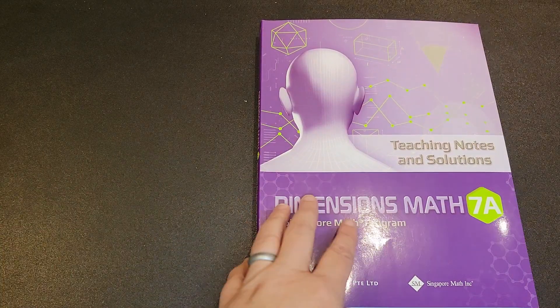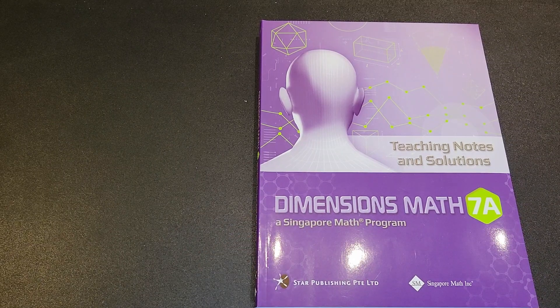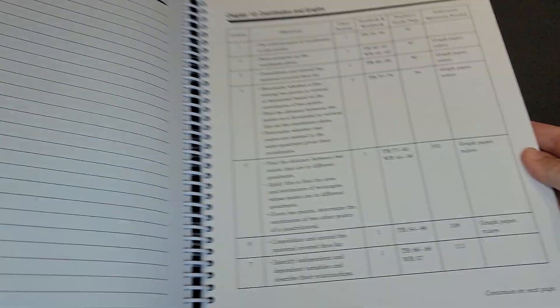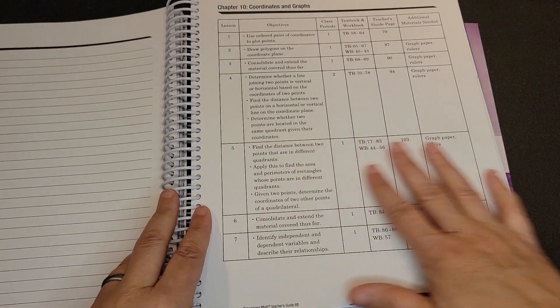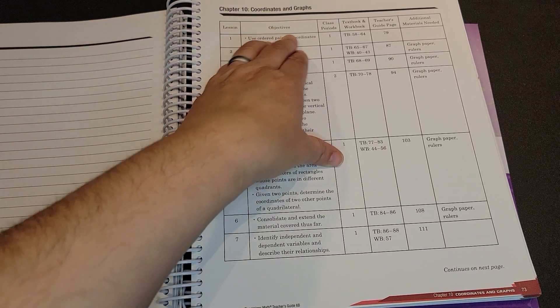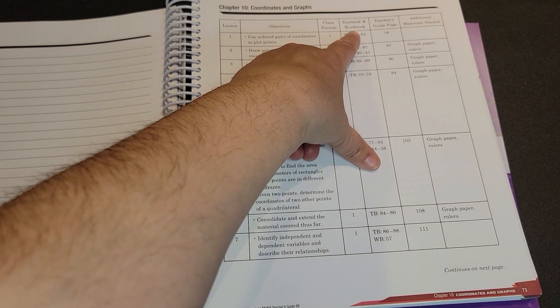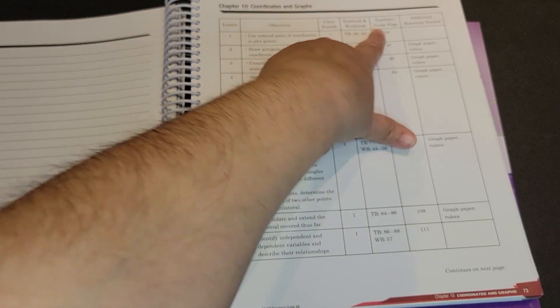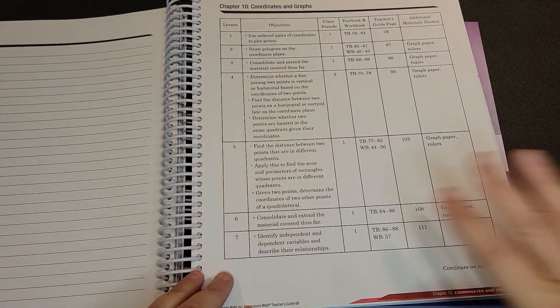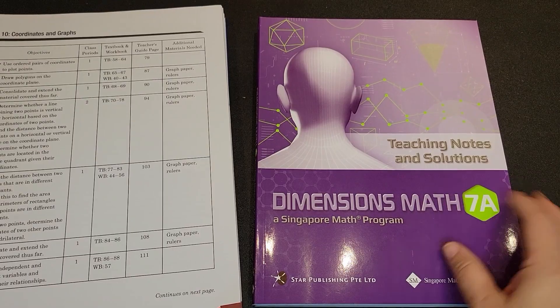The other thing to really note in this teaching notes and solution is there is no set schedule for us. So for example, in Dimensions 6, you would have had something that looks like this, which it gives you your objectives, the lesson objectives, how many class periods it takes, your textbook and workbook, your teacher's guide page, and then additional materials. You don't have this. This does not exist in this teaching notes and solutions.